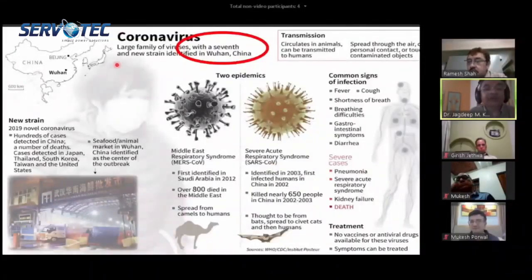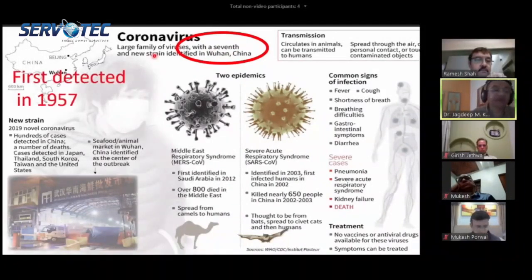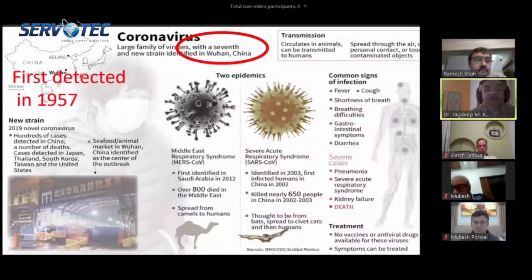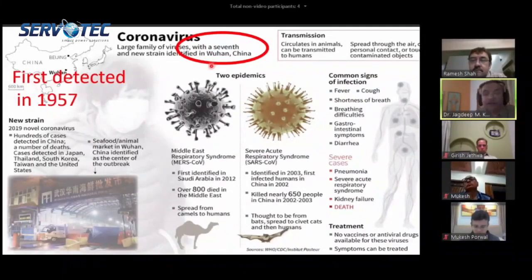The coronavirus family is a large family of viruses, of which there are six different coronaviruses. The first one was detected as early as 1957, the sixth was detected in 2002, and this one is the seventh virus, detected in Wuhan.